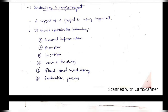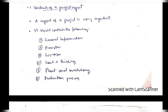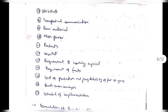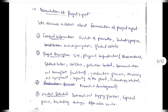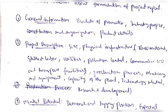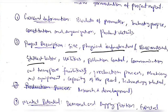The contents of the project report — a project report is a formal documentation of what the project is and the different subdomains in it. It should have general information, the promoter who is the leader of the project, the location, land and building, plants and machinery, and production prices. The formulation of the project report should have general information including the bio data of the leader, industry profile, constitution and organization, and the product details. After that we have the project description, which should include the site, physical infrastructure like raw materials, labor and utilities, and pollution control, communication and transport facilities.